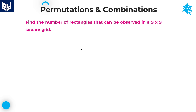Hi everyone, welcome to the session. In this session I will explain some more problems related to permutations and combinations. Find the number of rectangles that can be observed in a 9 by 9 square grid.